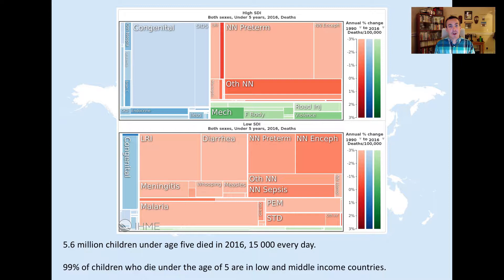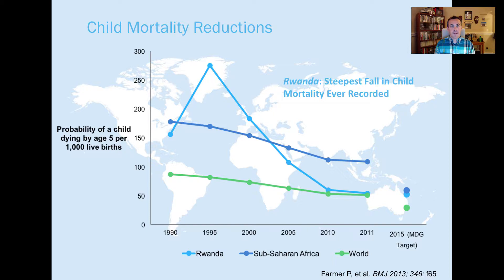Looking at deaths more starkly: in rich countries, congenital defects and neonatal issues cause deaths in children under five. In developing countries, it's lower respiratory infection, diarrhea, and malaria — environmental hazards. Over five million children die per year from these causes. Over 15,000 children die every day from the causes on these lower bars, and 99% of children under five who die are in developing countries.